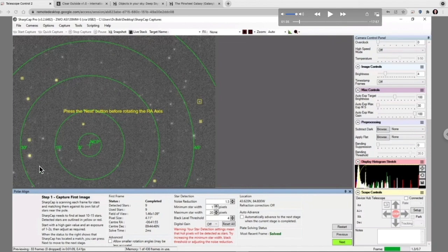SharpCap then plate solves and identifies all of these stars and figures out where the North Celestial Pole is. The North Celestial Pole may or may not be in the screen. Even though we've just pointed it with a little Kentucky windage we actually came up with a pretty good image here and the North Celestial Pole is visible in the image. So now it's instructed me to go ahead and hit next and it wants to take a second picture.